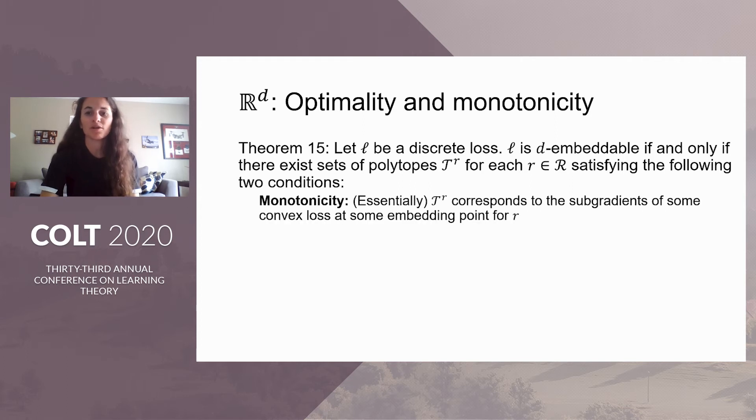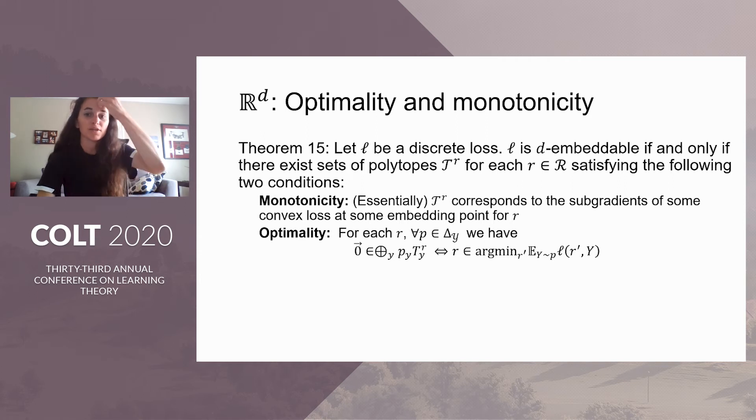In monotonicity, we want corresponding polytopes. The corresponding polytope is the subgradient of the surrogate loss at the embedded point, which is to say that for each report R, we'll let script T_R be a set of polytopes. Each one corresponds to an outcome, and T_R sub Y should be the subgradient set of the surrogate L when reporting phi of R or the embedding of R, and the outcome is Y. For optimality, we want that for each report and every distribution P, the P-weighted Minkowski sum of the polytopes T_RY contains a zero vector if and only if R minimizes the expected discrete loss over P.